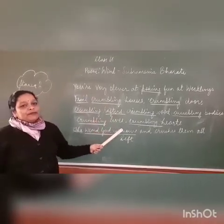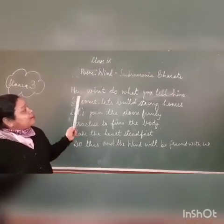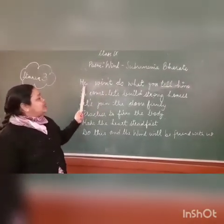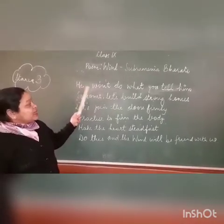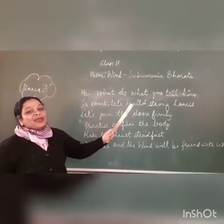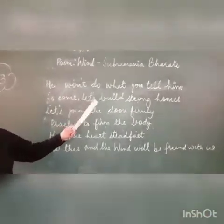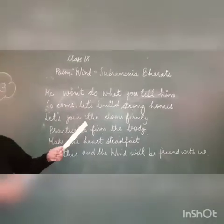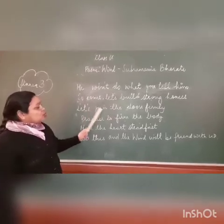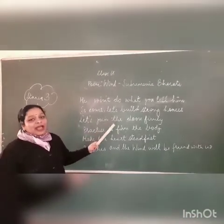The entire poem is a blank verse with no rhyming scheme. Now let's come to stanza 3. Poet Subramanya Bharati is in a suggestive mood. He says the wind won't do what you tell him — the wind would not behave the way we want. So the suggestion starts: let's build strong homes. Rather than complaining and falling victim to the wind, we must build strong homes. The crumbled houses must be repaired and built strong. Let's join the doors firmly rather than getting them crumbled and fallen down.